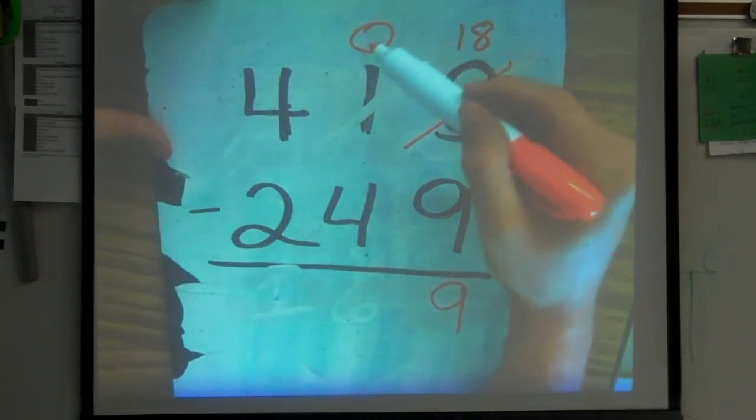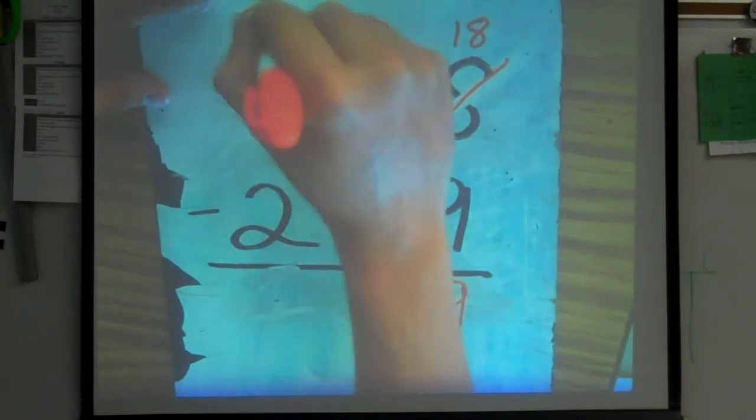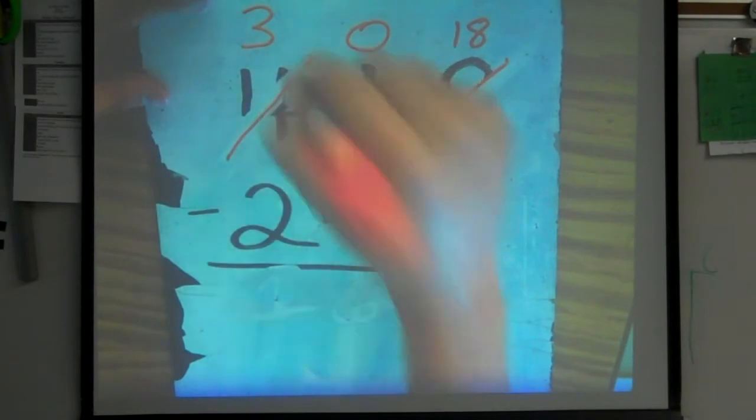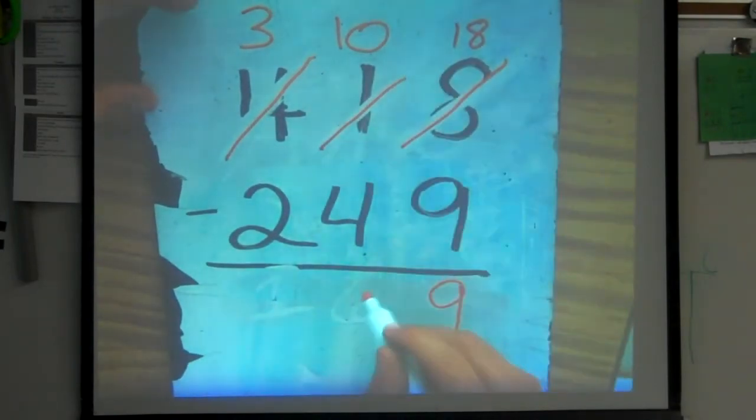Now the tens column, is the big number on top? 0 and 4, no it is not. So I've got to move over to the hundreds, borrow 1, that 4 is going to turn into a 3, and I borrowed once, that 0 is going to turn into a 10. 10 minus 4 gives me a difference of 6.